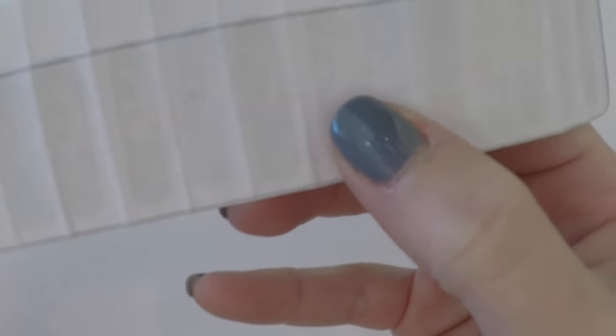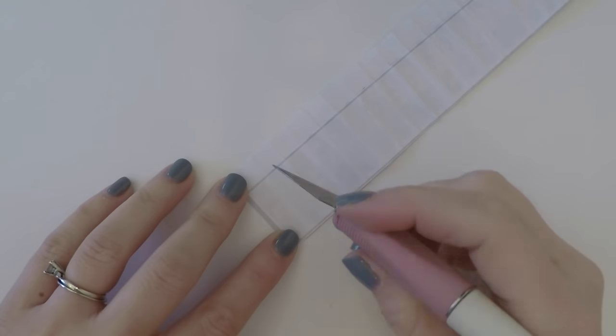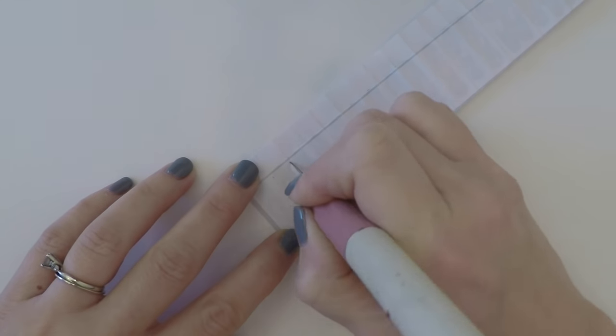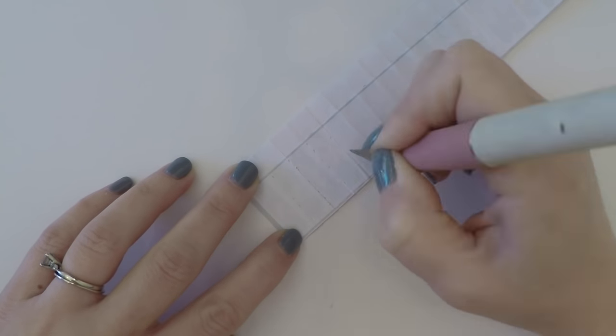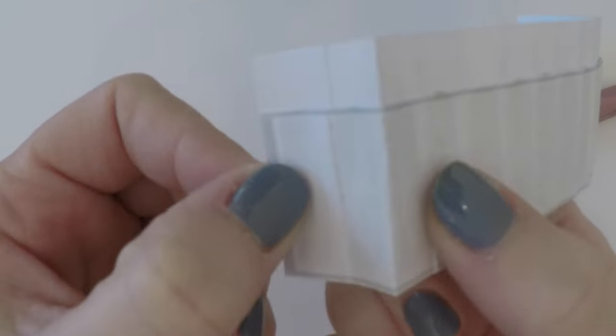So here's a close-up. All the band-aids have been put into place. Now you can take an exacto knife or your scissors or a toothpick and poke holes right in between each band-aid where the dotted lines are.